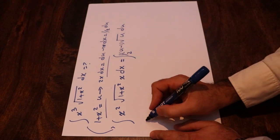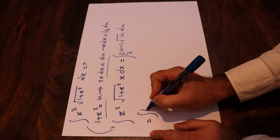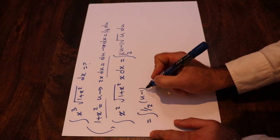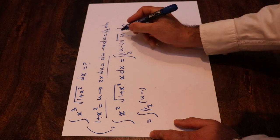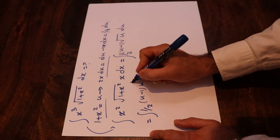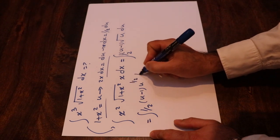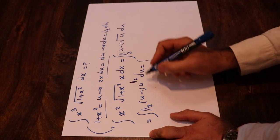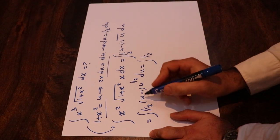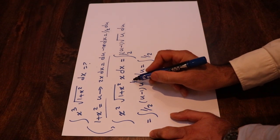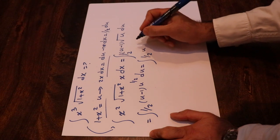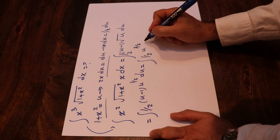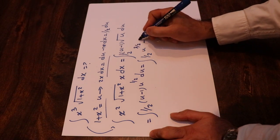So therefore, that is basically equal to the integral of (1/2)(u minus 1) times, instead of the square root of u, I write u^(1/2) du. This will be equal to the integral of (1/2) times u times u^(1/2), which equals u^(3/2) du.